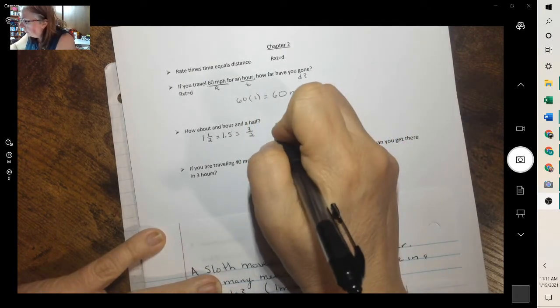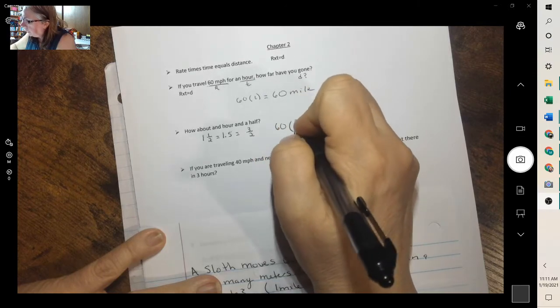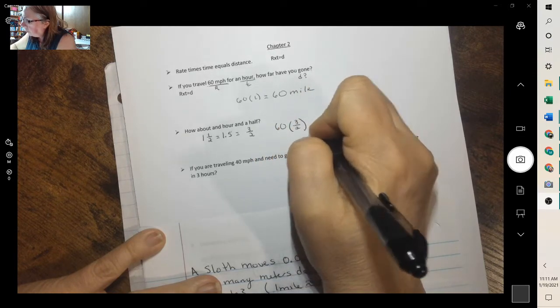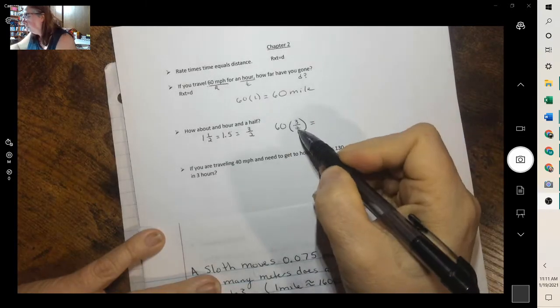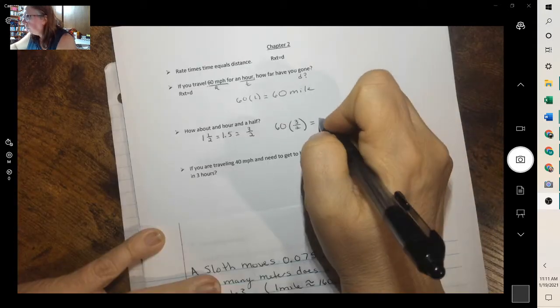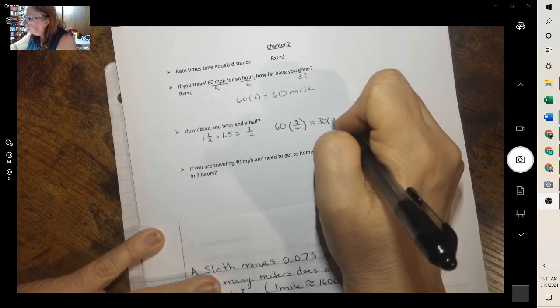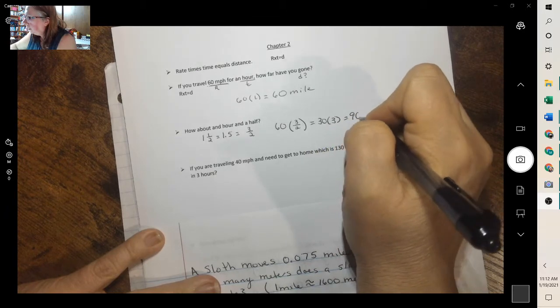Our rate was the same, 60. Our time is 3 halves. And you can divide first. 60 divided by 2 is 30, times the 3 is 90 miles.